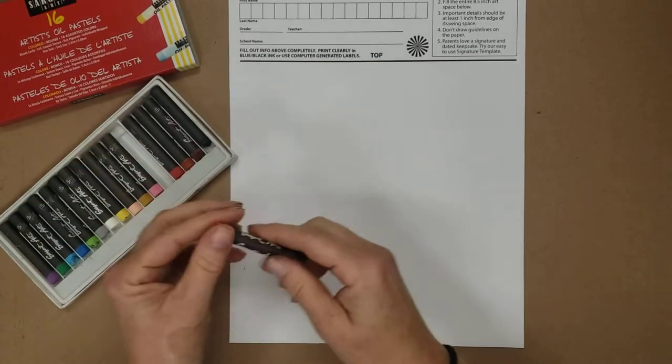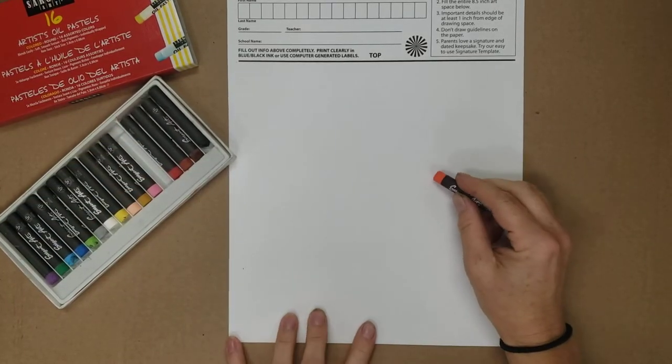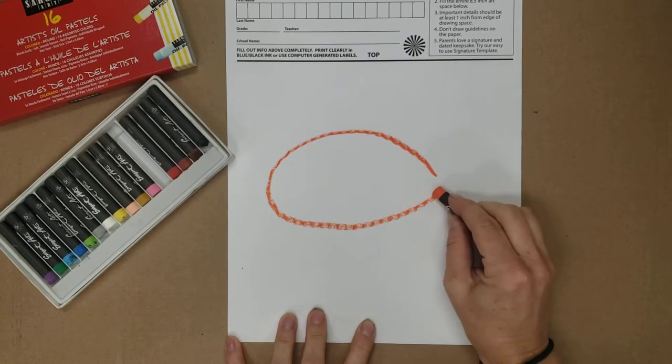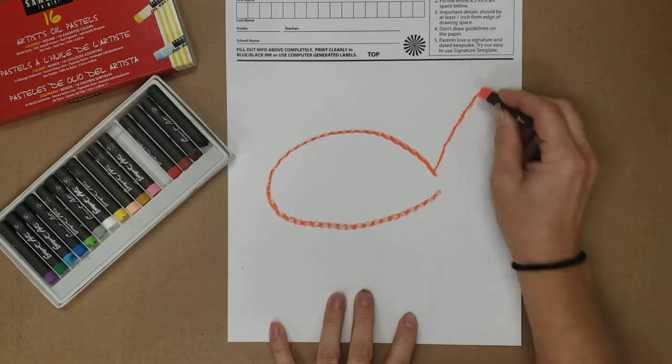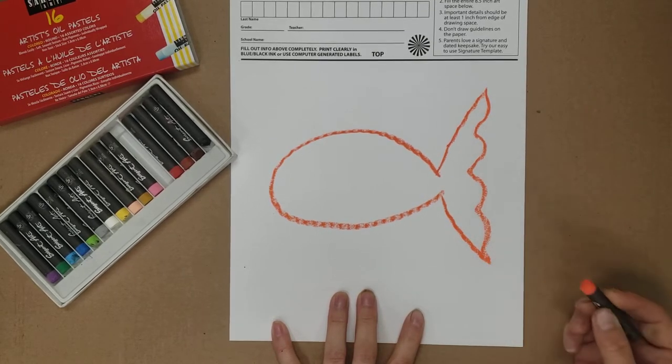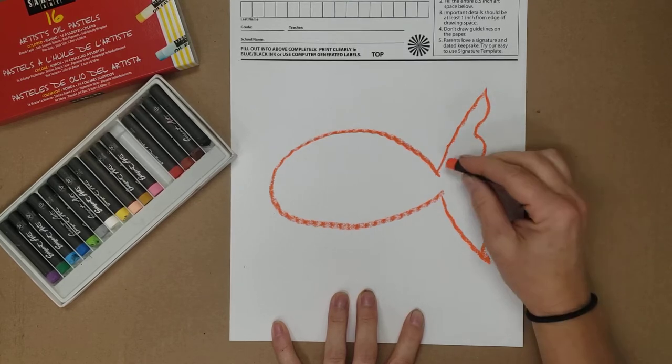Let's say I decide I'm going to do more like a goldfish, so I'm going to draw my fish which is going to be kind of an oval shape, and then I'm going to add my tail which are going to be like two diagonals.